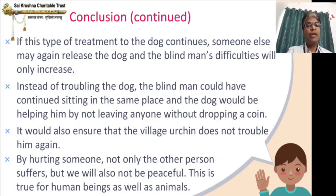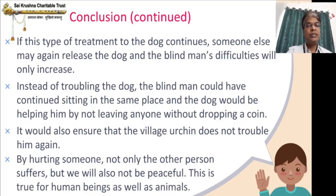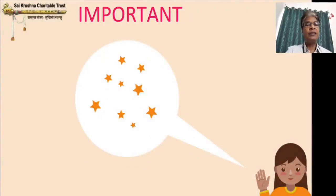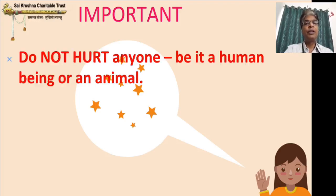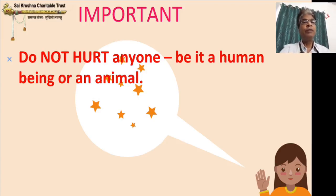By hurting someone, not only does the other person suffer, but we will also not be peaceful. This is true for human beings as well as animals. Therefore, we should not hurt anyone. The main thing is, if you are able to help, it's good; otherwise we should not do any hurting to anybody, whether it is a human being or an animal. This is the most important value we learned in this chapter. If you learned any other value, note that down as well.